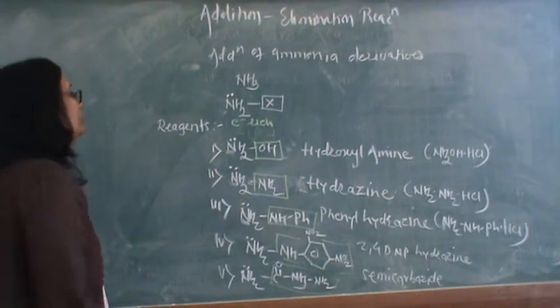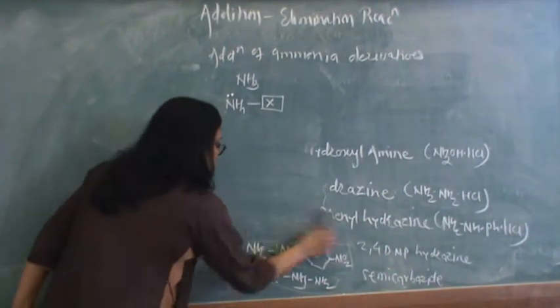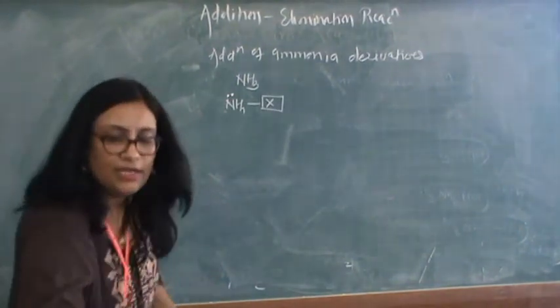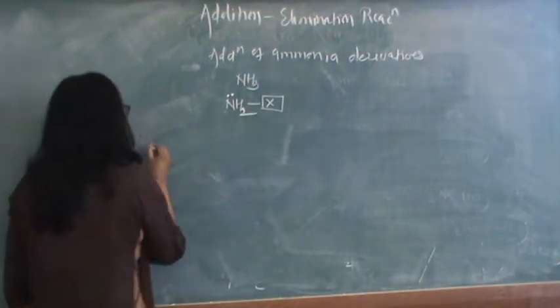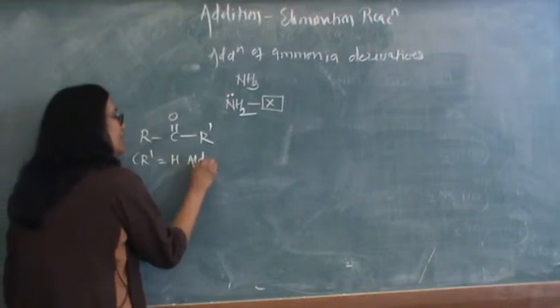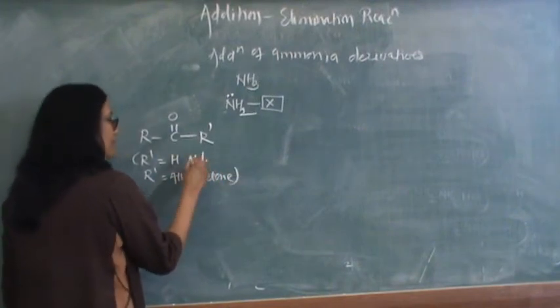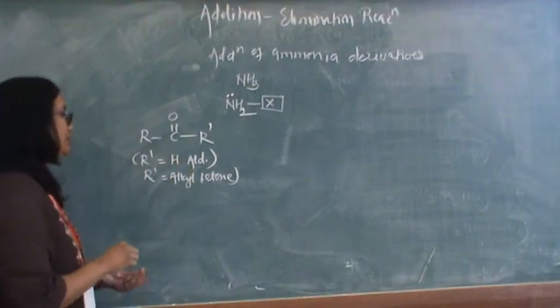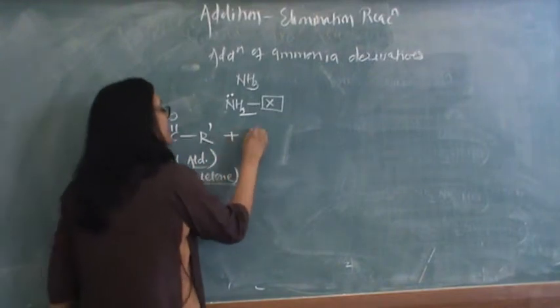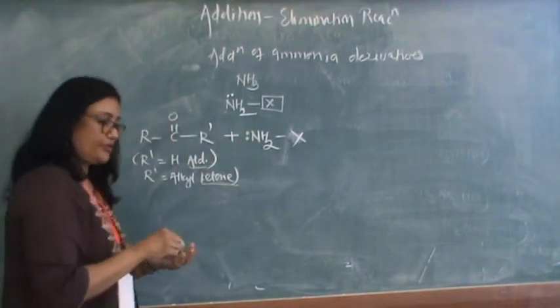So let's see when these particular reagents react with aldehydes or ketones, what products you get. Any carbonyl compound will be RCO with R prime. If R prime is hydrogen, we call that as an aldehyde, or if it is an alkyl group, then we call that as a ketone. So you can have either aldehyde or ketone taking part in this particular reaction. Now when it reacts with NH2X, we have nitrogen with a lone pair of electrons.